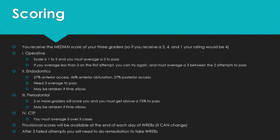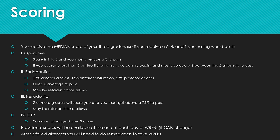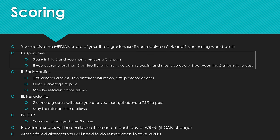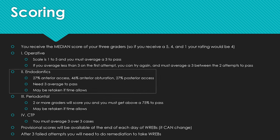For scoring, pretty much everything is graded by three graders and you need a median score of the three to pass each exam. In operative, each category is scaled one to five and you must average a three to pass. If you get less than a three on your first attempt, you can take a second attempt and the average between the two must be three or above. Endo is broken down with 27% for each access and 46% for obturation of the anterior, and your average must be a three to pass.